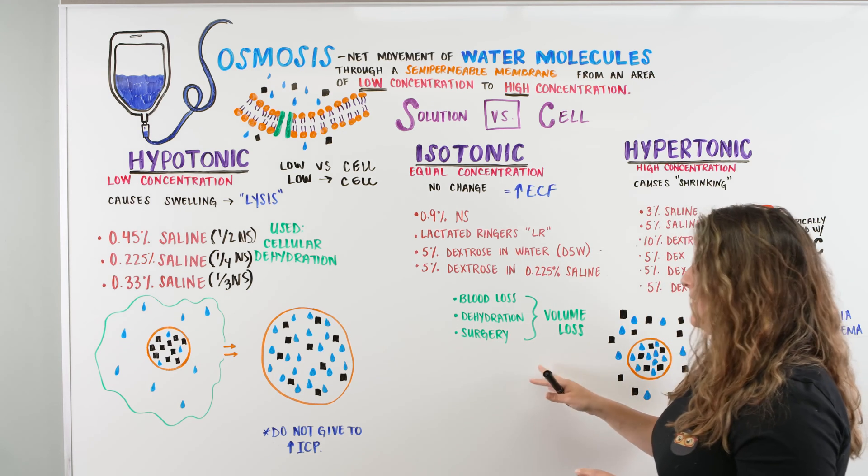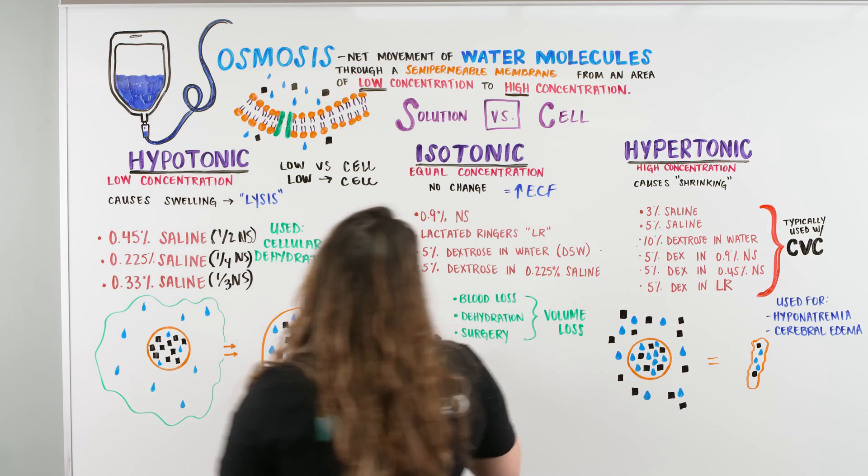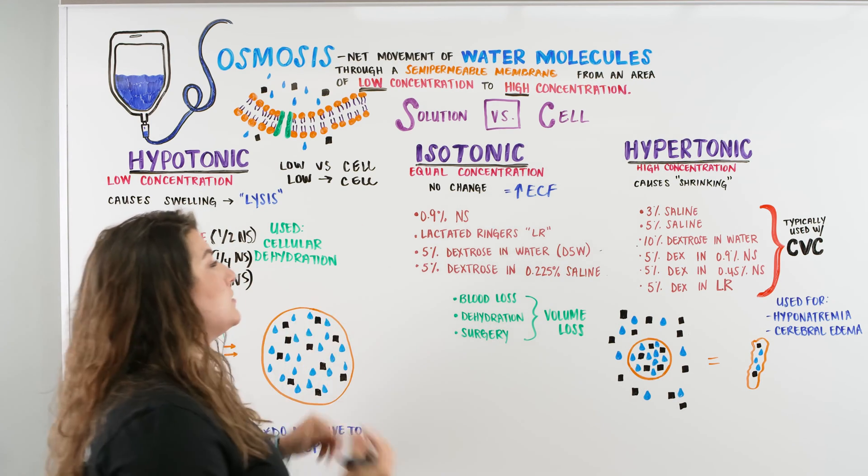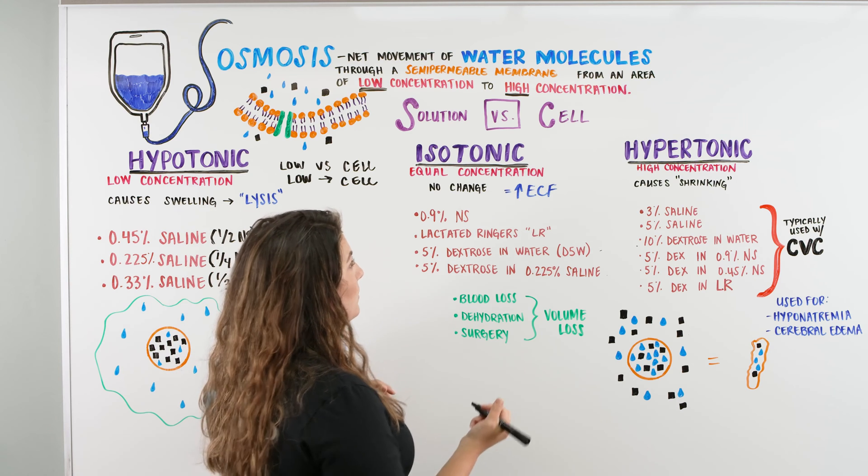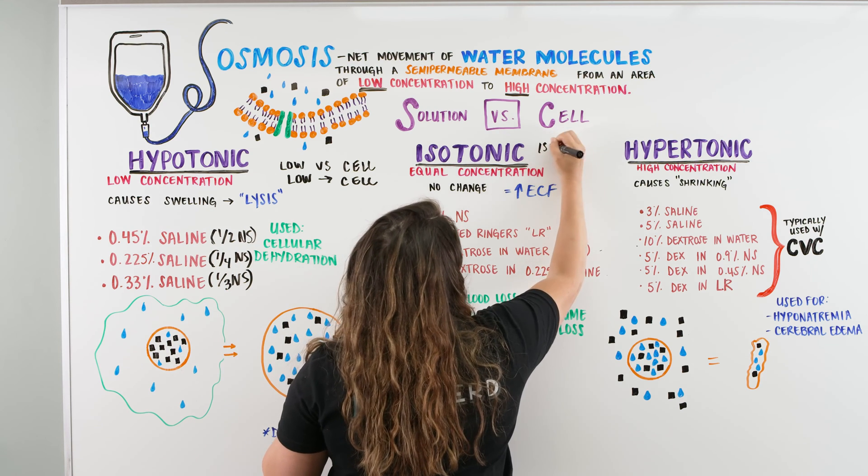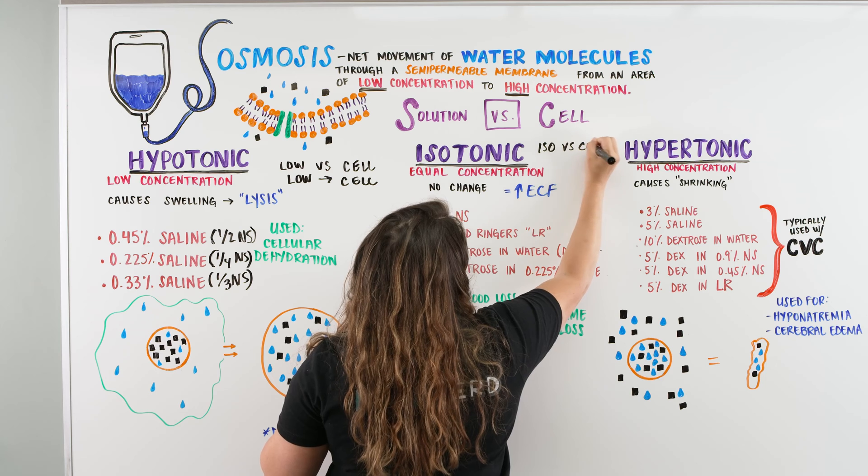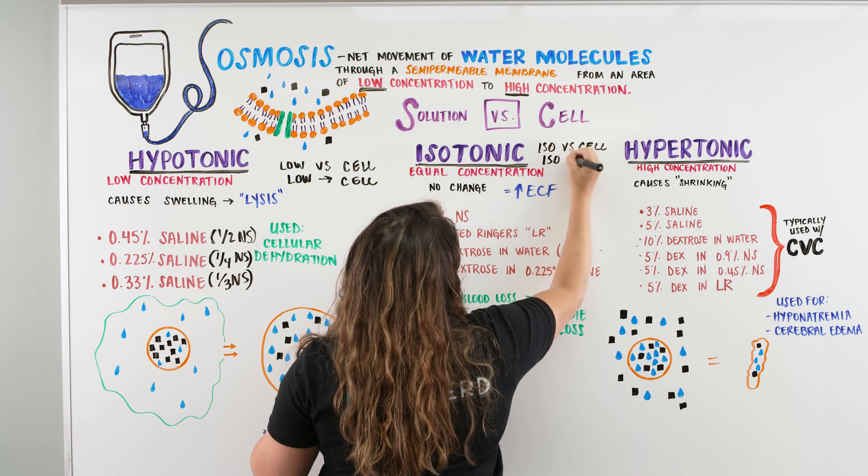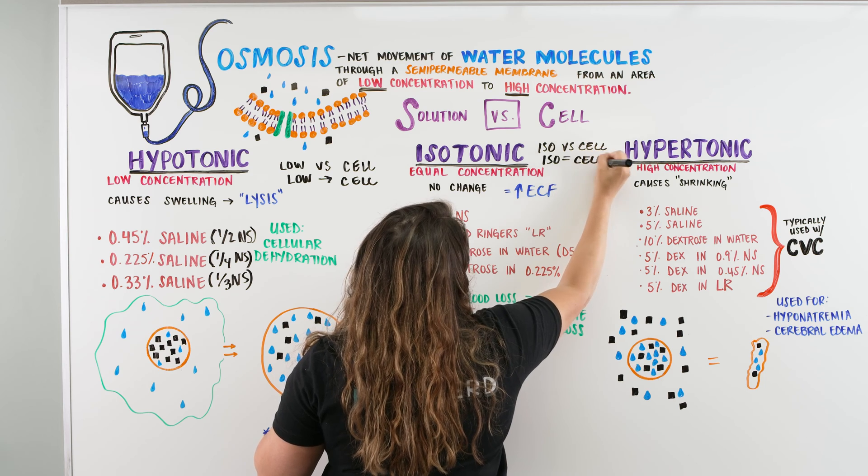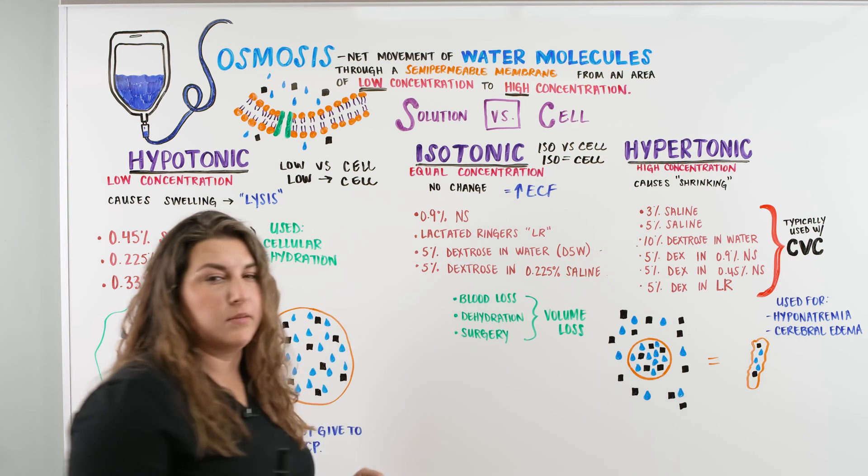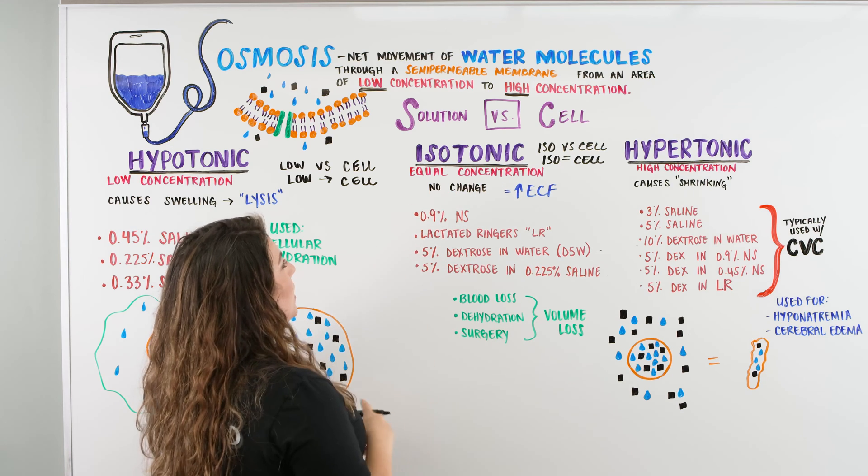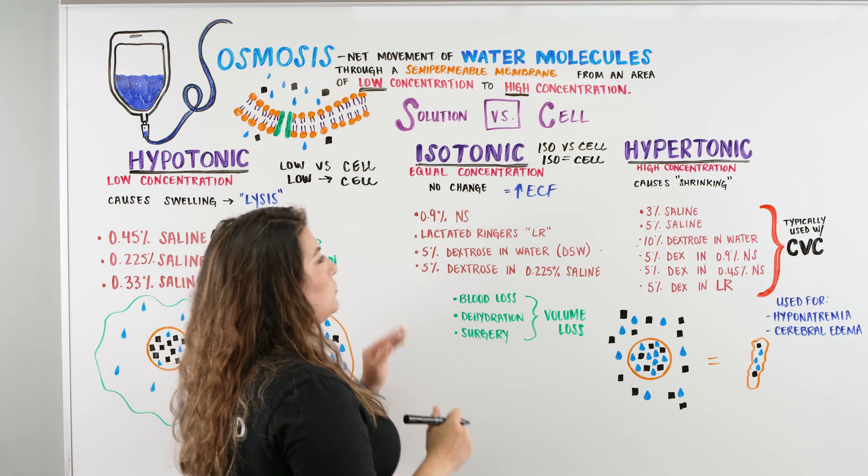Let's move on to our isotonic. With our isotonic, again, we're going to go back to solution versus cell. What does the word iso mean? Iso means equal, right? So we have iso versus cell. And we know that iso means equal. So we have iso is equal to cell. So what does that mean? Does that mean there's going to be any movement? Absolutely not. So because we have the isotonic, we have an equal concentration, and we have no change.